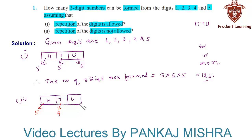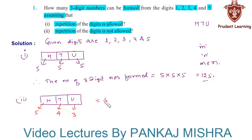Similarly, the units place can be filled with any one of the remaining three digits in three different ways. So by the fundamental principle of counting, the number of three-digit numbers formed is five into four into three, that is 60. Hence when repetition of digits is not allowed, the number of three-digit numbers that can be formed is 60.